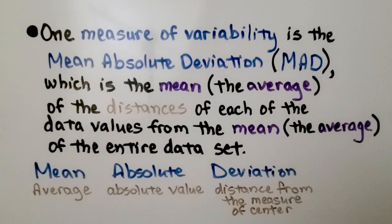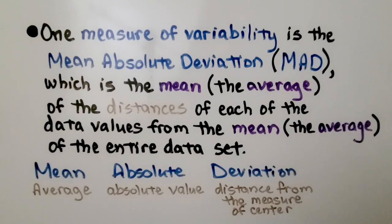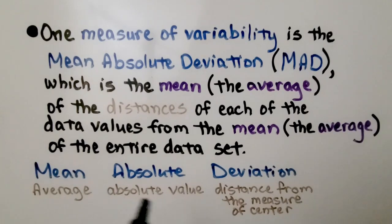One measure of variability is the Mean Absolute Deviation, MAD, which is the mean — the average — of the distances of each of the data values from the mean of the entire data set. So the mean absolute deviation is the average of the absolute values of the distance from the measure of the center. This is really confusing — stick with me.